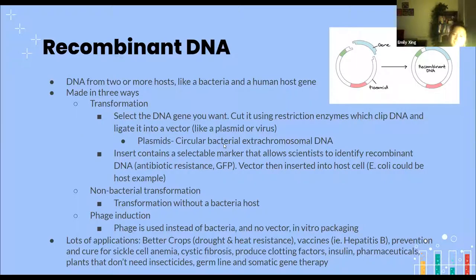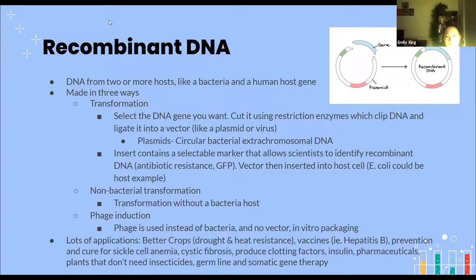Our first area of interest is recombinant DNA, which is a very important part of biotechnology because there are a lot of potentials and different combinations that can result. Recombinant DNA is DNA made from two or more hosts — for example, a bacteria gene and a host human cell. Recombinant DNA can be made in three ways, and the first way is transformation.